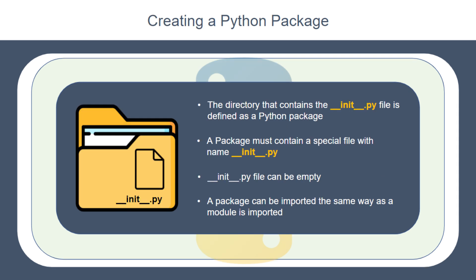The first step to create a Python package is to create an `__init__.py` file. This file is mandatory in a package and notifies the Python interpreter that a package has been created. The `__init__.py` file can be empty, which means all modules and functions within that package are allowed to be imported. If it is not empty, you can specify which particular functions in a particular module are allowed to be imported — nothing else will be allowed. So it's a very important file that must be present.